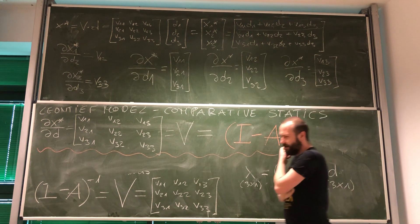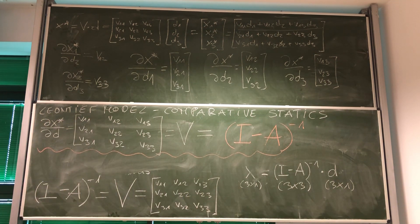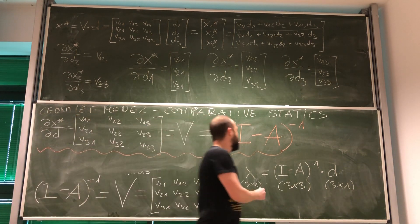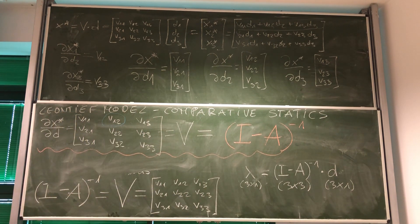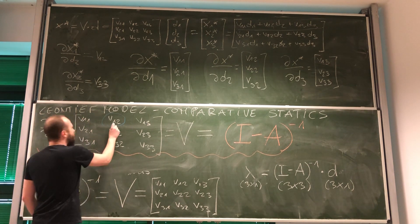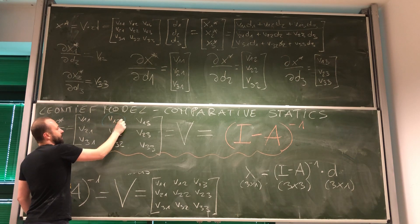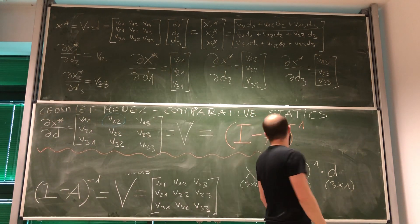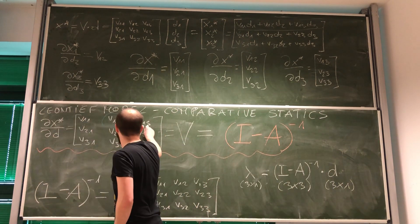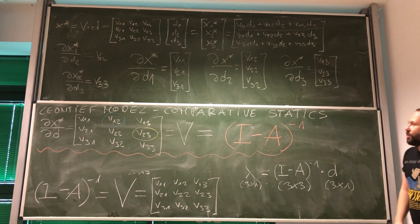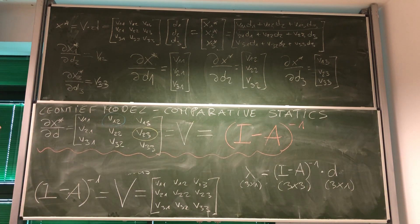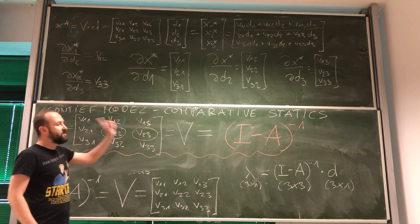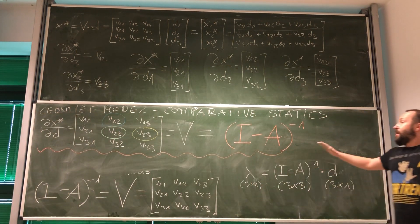Well, this is one of those things that is better practiced than just explained. But you will practice it during workshops. Look, what are we getting here? This entry over here is simply telling us what will happen to the level of production of good one if demand, final demand for good two increases. What do we have over here? What will happen to the level of production of good two if final demand for good three increases? And what we have over here, what will happen to the level of production of good two if demand for good two increases?